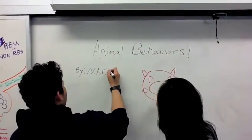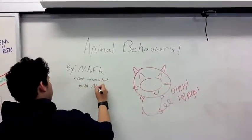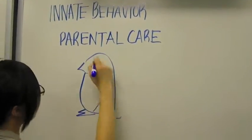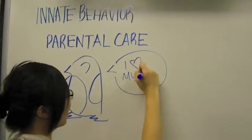Animal behavior can be inherited, which is innate, or it can be learned through interaction with their environment. Three kinds of innate behavior are instinct, fixed action patterns, and imprinting.